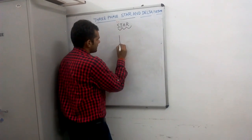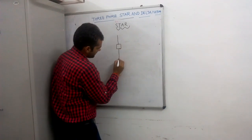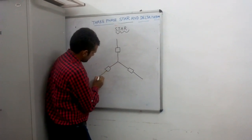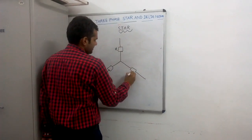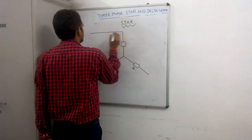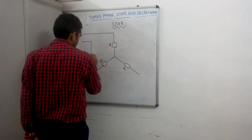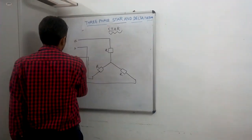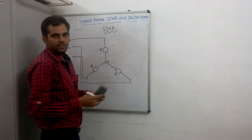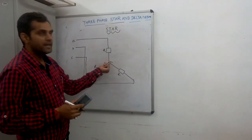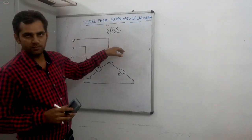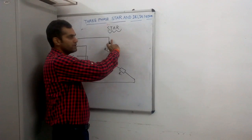Let us draw the star circuit. I have considered here a load resistance R in a star fashion, with line A, line B, and line C. This is the neutral point. In the star circuit, the similar ends of each conductor are joined at a common point known as the neutral point. We have the line parameters A, B, C and we have the phase parameters — the circuits between each line and the neutral are called phase circuits.